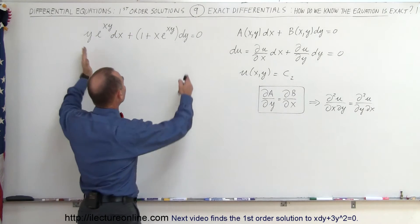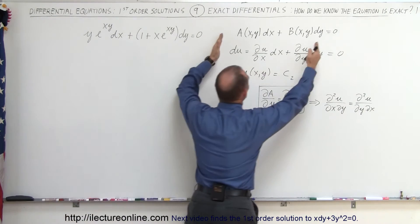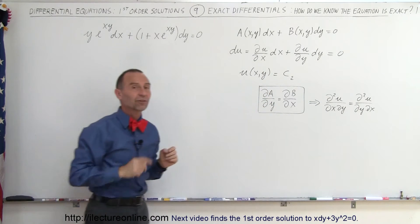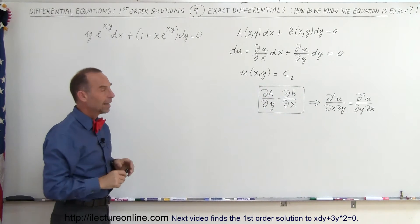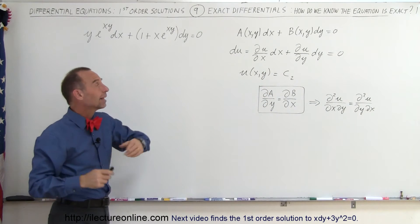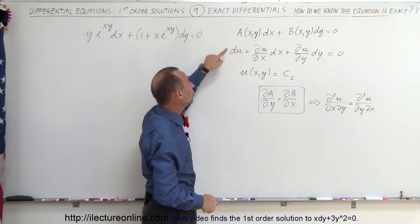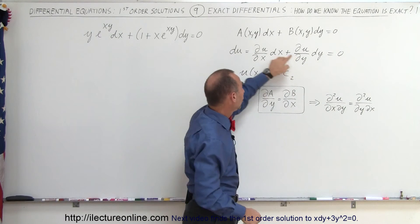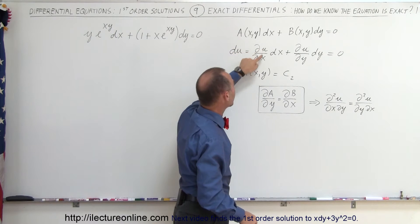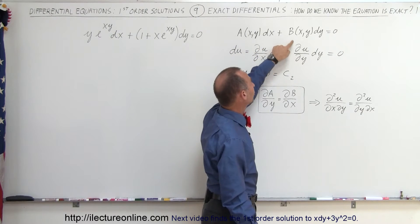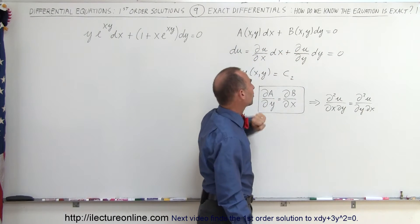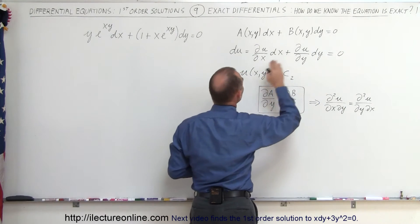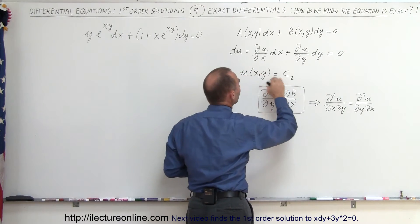Now you do recognize that this has the same format as we've seen before — the general format of an exact differential equation of the first order — and we can say that the solution to that would be u, such that du equals this, where a equals the partial of u with respect to x, and b equals the partial of u with respect to y. Realizing that du equals 0, which means u is equal to a constant.